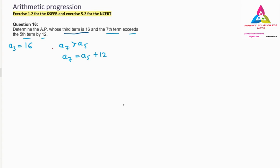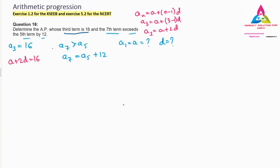We need to find both the first term a and the common difference d — neither is given directly. Starting with what is given: a3 = a + 2d = 16. Since both a and d are unknown, we take this as Equation 1.